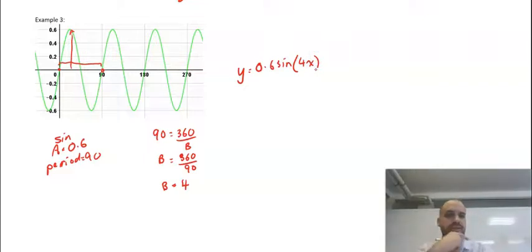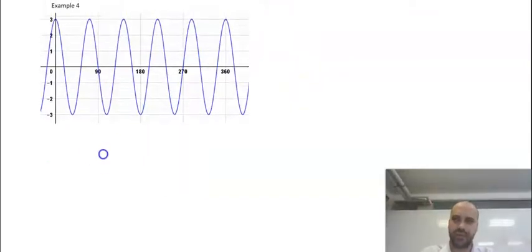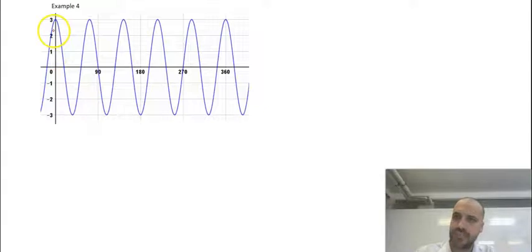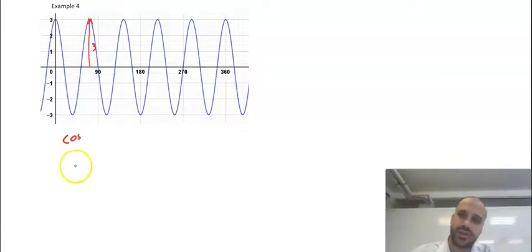I'm going to do one more, and this one's going to have a little bit of a twist in it. The first two steps on this one are going to be relatively straightforward. We take a look at it. It starts up the top, not in the middle, so it must be a cosine curve. The distance from here to the top, we can see, is 3 units. So, the amplitude is going to be equal to 3.